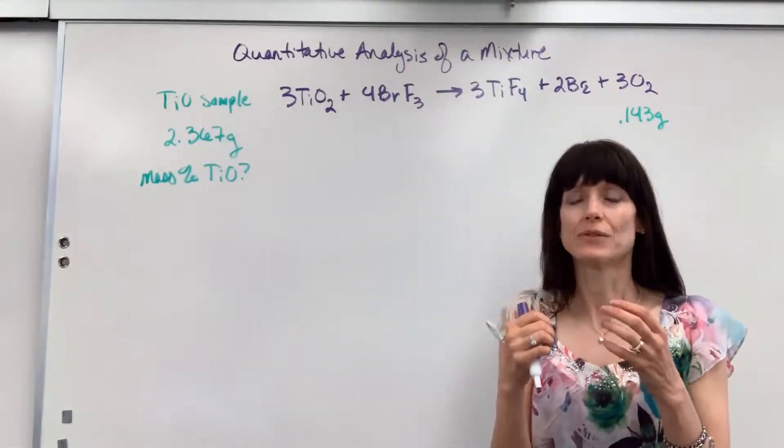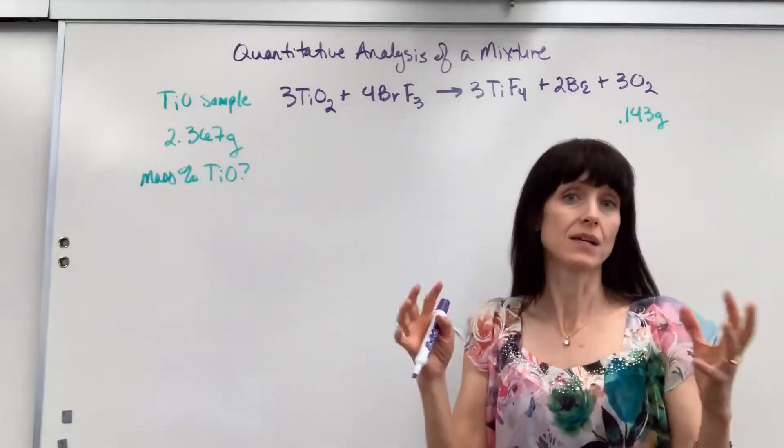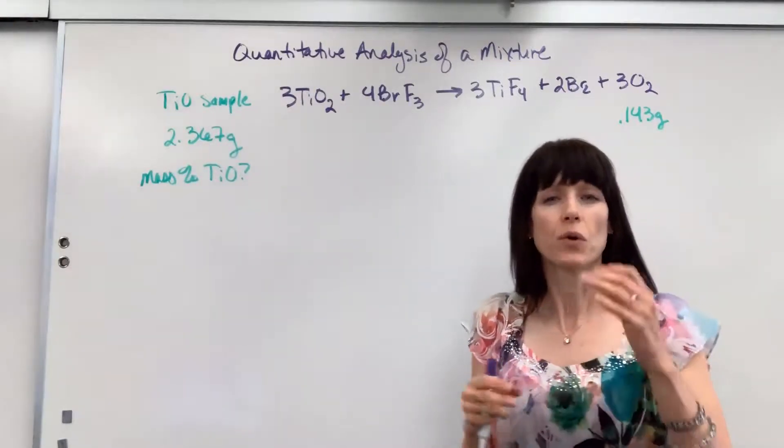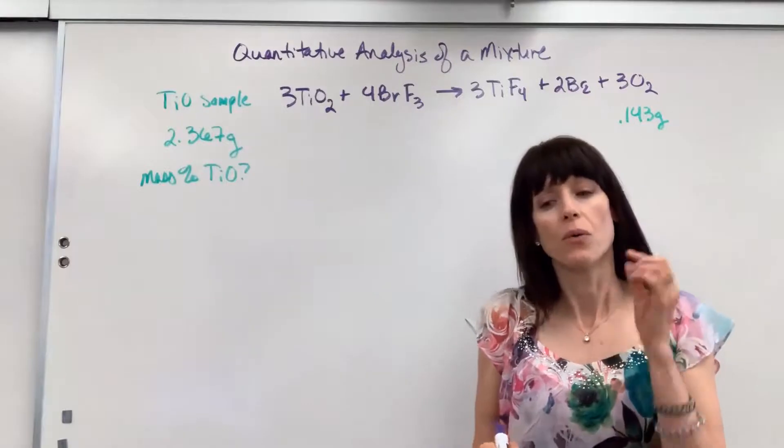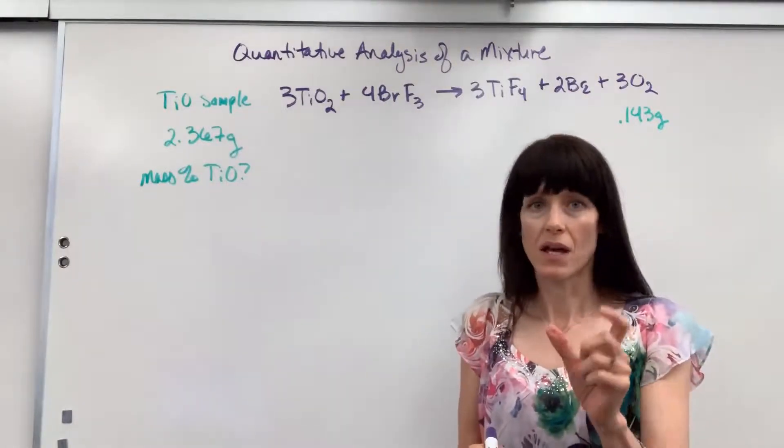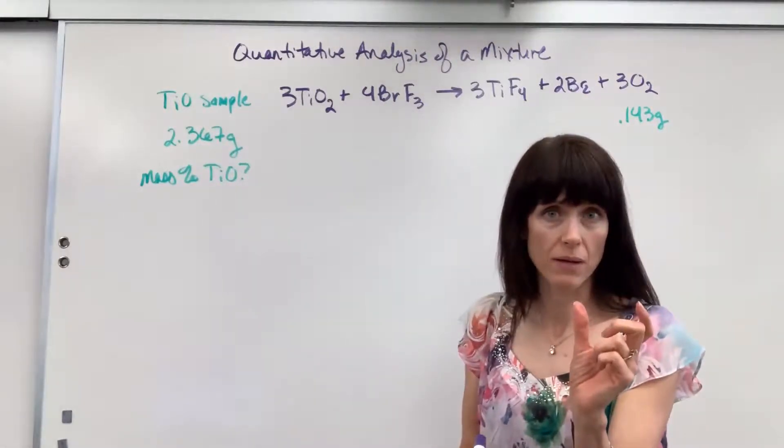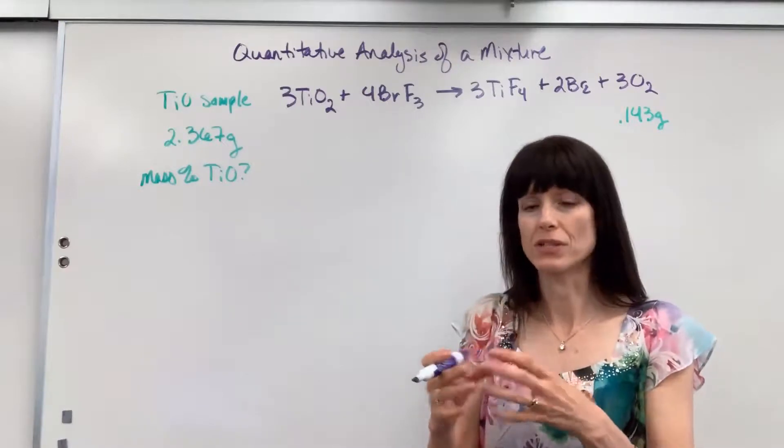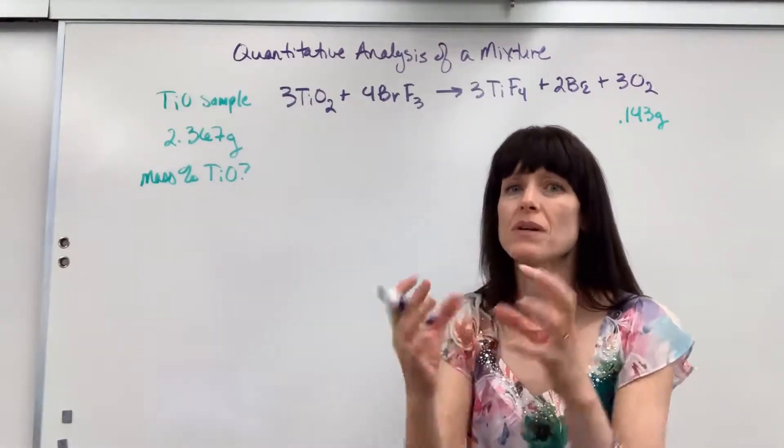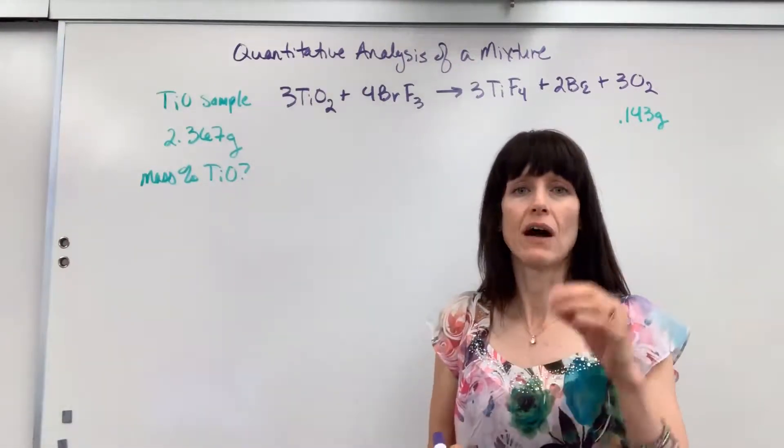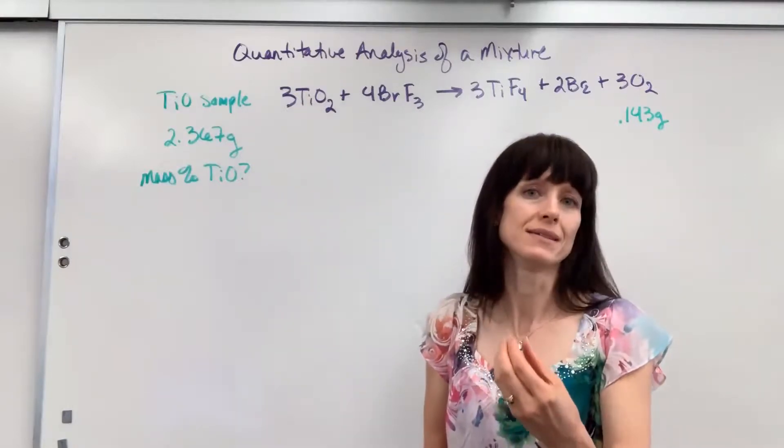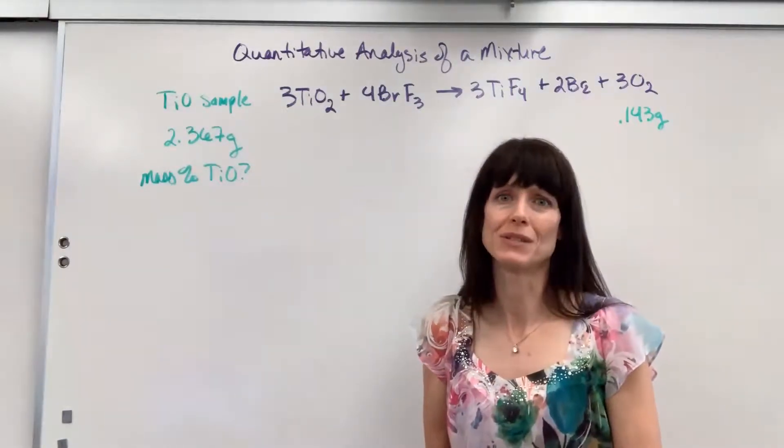So the mixture is going to be some sample that has a number of different compounds in it. The question that you'll be asked is, what is the percent mass of one particular compound in that entire mixture? So it's really some impure sample and you want to find out how much of one compound is inside of that. We're going to use stoichiometry to do it.